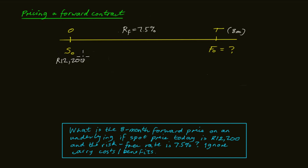The forward price is determined by multiplying the spot price at T0 of 12,200 Rand by a compound interest rate per annum of 7.5% for a period of eight months. And that equals 12,802 Rand and 62 cents. And that is the forward price of this particular contract.